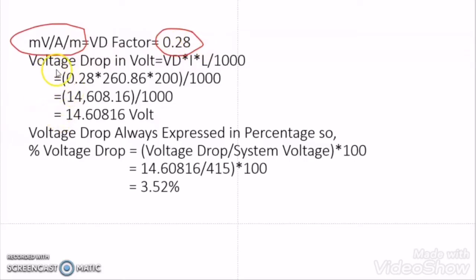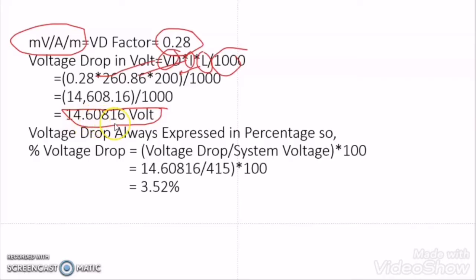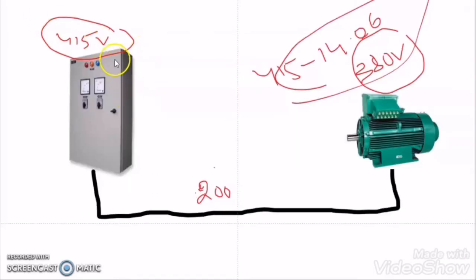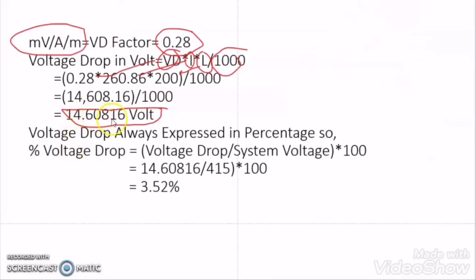Now we have all the information. Voltage drop in volts = VD factor × load current × length of cable / 1000. VD factor is 0.28, I is 260.86 A, and the length of the cable from the question is 200 meters, divided by 1000. When we calculate, we get a voltage drop of 14.60 V. This means if the voltage at the panel end is 415 V, then the voltage at the motor end will be 415 − 14.6 = 400.4 V.